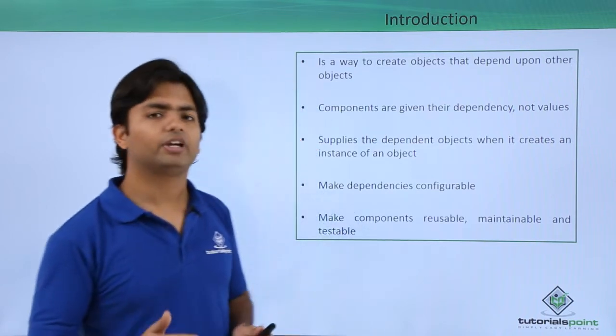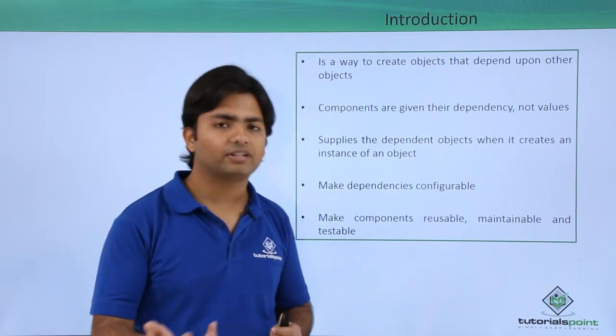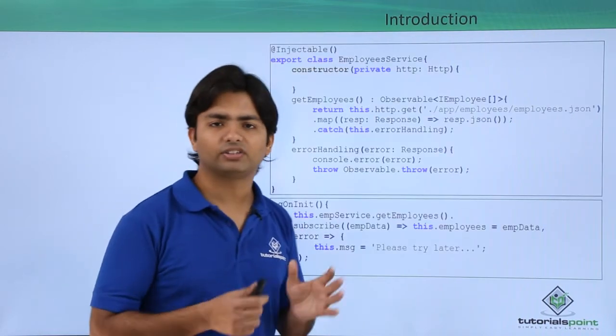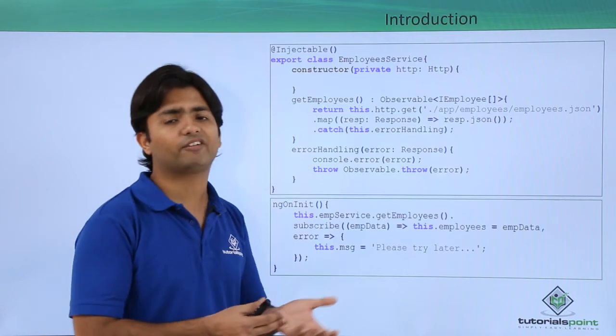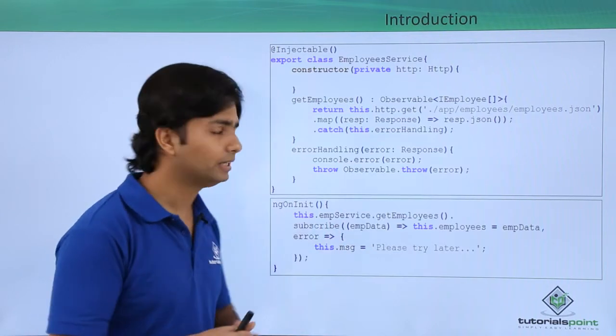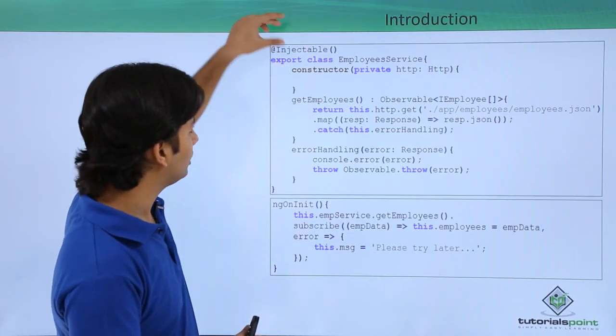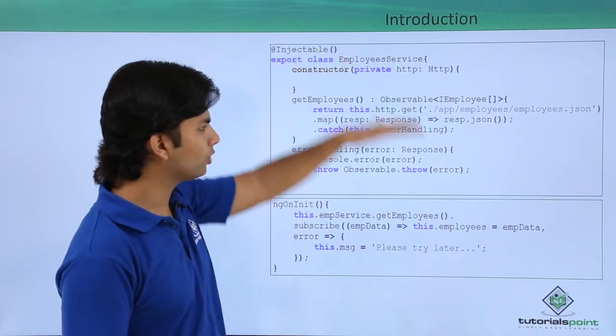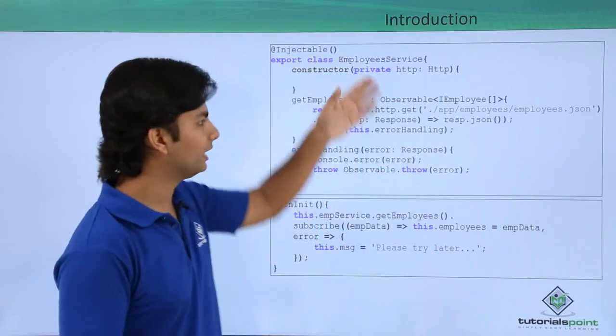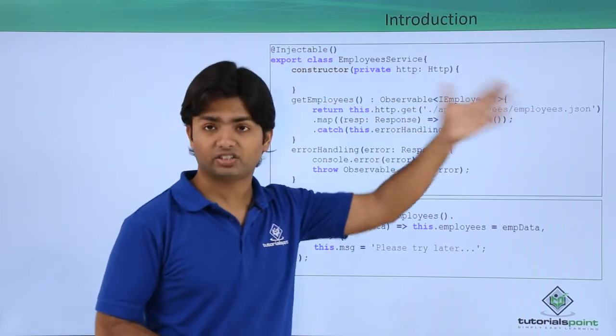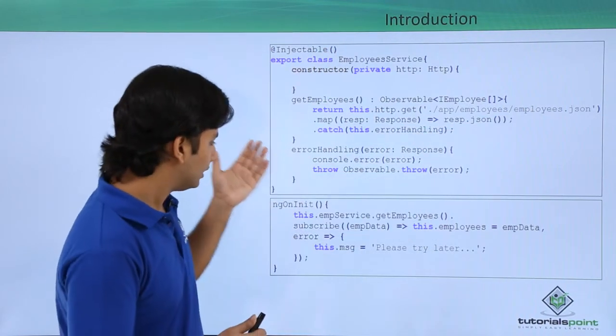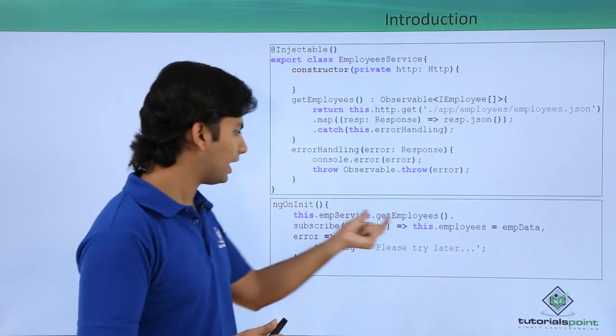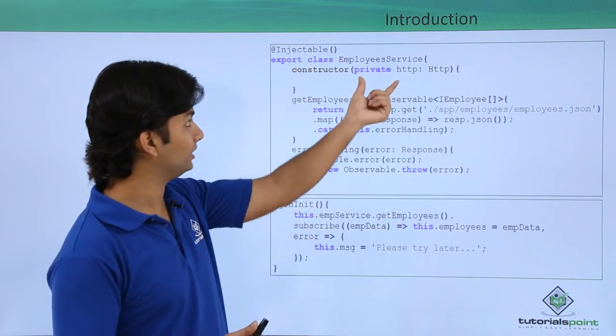Let's see where we have done this dependency injection in our code. While we were discussing the service and loading data from an external JSON file, we created this injectable decorator at the top of my service, and I wrote all the code for reading that JSON file.